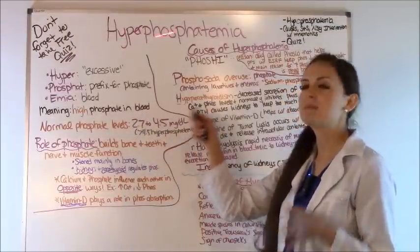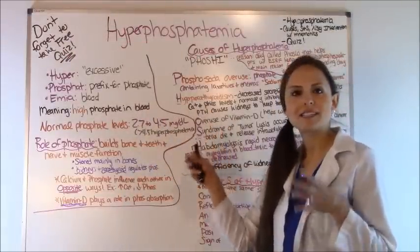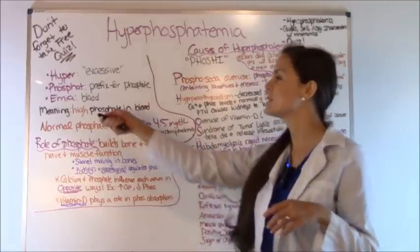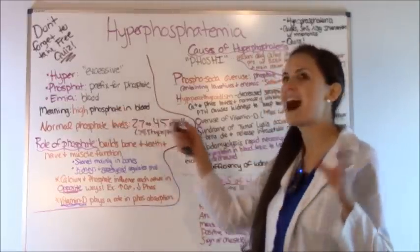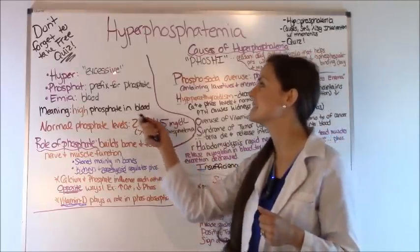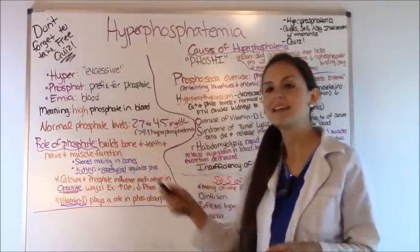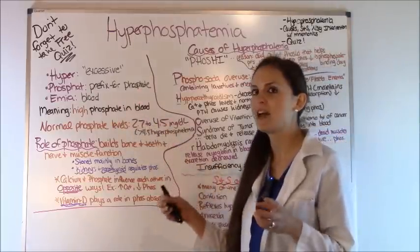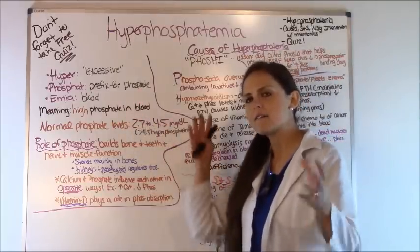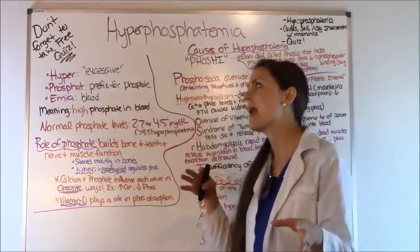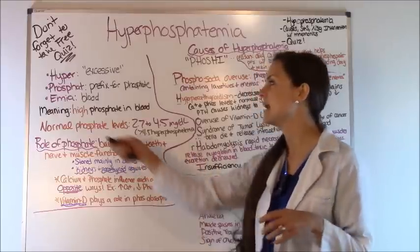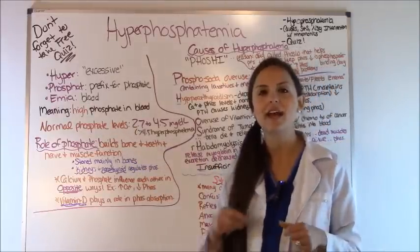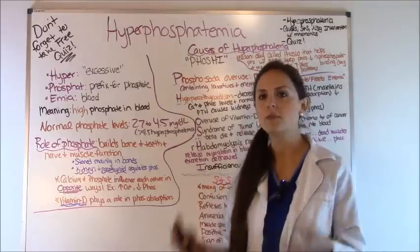First let's break down this big long word and see what electrolyte we're dealing with and if we're in a high or low state. The first part of the word is hyper and it means excessive, and phosphate is the prefix for phosphate, so we already know that we're dealing with electrolyte phosphate and it's in an excessive state, and emia means blood — so when you put all that together you get high phosphate in the blood.